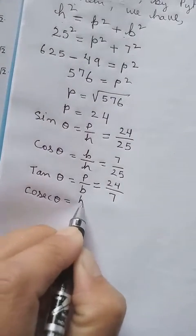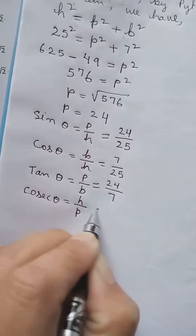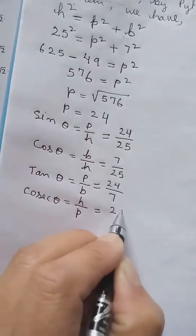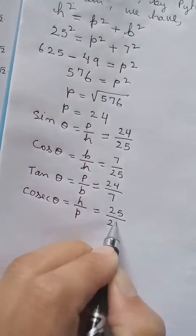Cosec equals H by P. H you know is 25, P you know is 24.